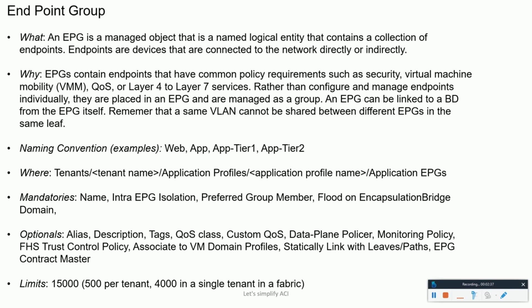Endpoint Group — the endpoint group is a managed object which is a collection of endpoints, meaning hosts connecting directly to the ACI fabric. The endpoint group is the most important object of this policy model. Endpoints have an identity, a location, and attributes like version and patch level. They can be physical or virtual, depending on whether they are installed on a vCenter, SCVMM, or a bare metal physical server.